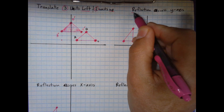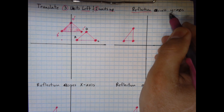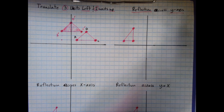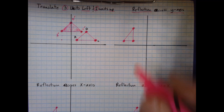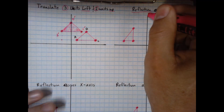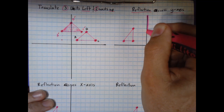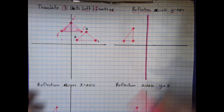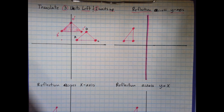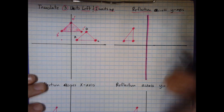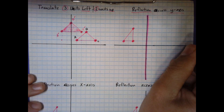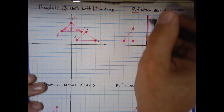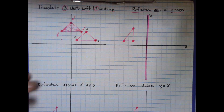Now let's look at a reflection across the y-axis. First, remember which axis is which: the y-axis is the vertical axis that runs up and down, and the x-axis runs left and right. I'll go ahead and label them.